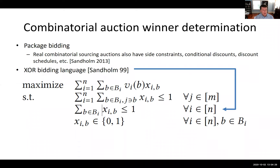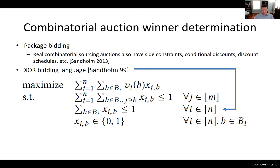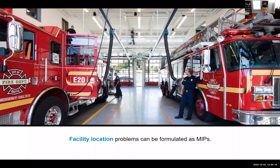Combinatorial auction winner determination is one example of an integer program. The traditional form of combinatorial auctions is package bidding, but it gets a lot richer than that. In the package bidding model, the MIP is to maximize the sum of accepted bid values, subject to the constraint that no item is sold more than once and that for any bidder not more than one of their bids is accepted — enabling full expressiveness — and bids must be accepted all or nothing. When we get to the real models it's richer than this.